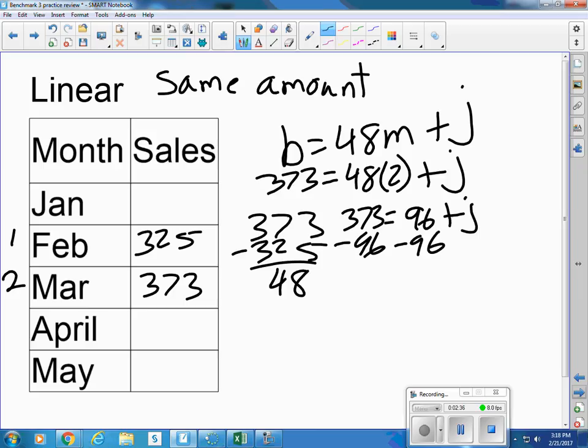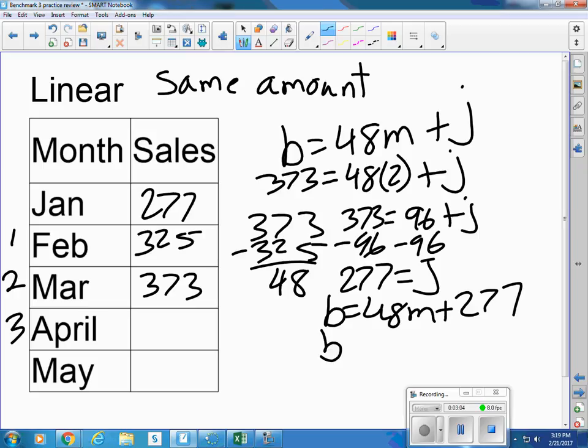If it were 100, it would be 273 left over. But it's not quite, so it's 277. So I can help fill out that table, but I can finish my equation. And I can also continue to fill in the table. Like for April, that would be month number 3.